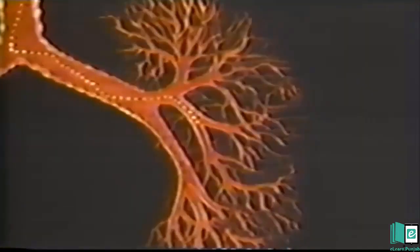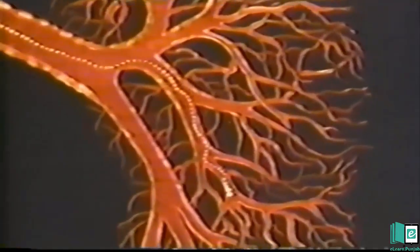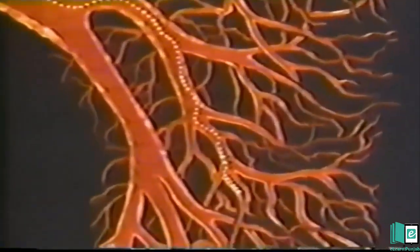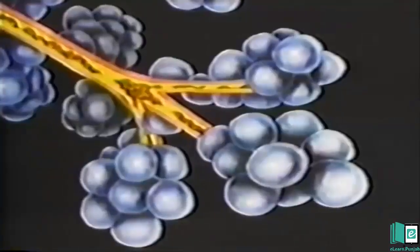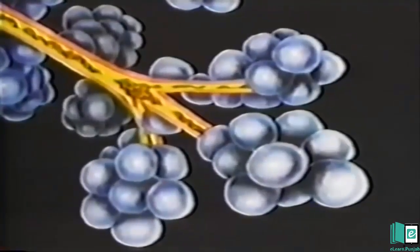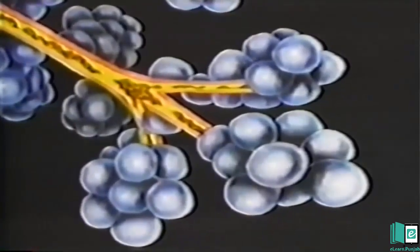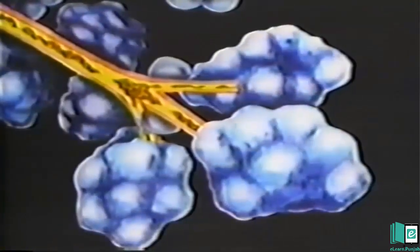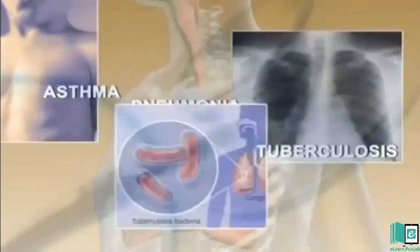Pneumonia. Pneumonia is an infection that affects the lungs. The lungs are made of small sacs called alveoli, which are filled with air. When a person has pneumonia, the alveoli are filled with pus, which makes breathing painful. Pneumonia is the main cause of death in children worldwide. Common symptoms of pneumonia are cough and fever.